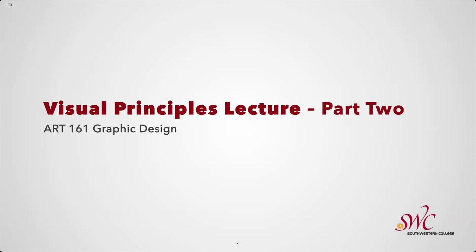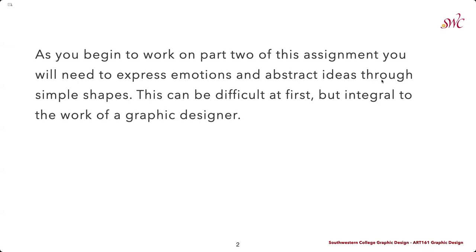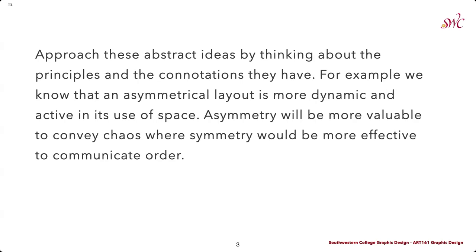This is the Visual Principles Part 2 lecture for the ART 161 Graphic Design class. In the second half of this project we're going to be focusing more on these core concepts of creating more abstraction, and directly relating to the first part of this project, thinking about how we can use those principles to evoke certain emotions and different feelings that you are going to choose from a list. As you begin to work on Part 2 of this assignment, you're going to think about ways to express emotions and abstract ideas through these same simple shapes — the basic elements of points, lines, and planes. The same rules are going to apply from Part 1 as well, and this can be difficult at first, but it's really important to understand these basic concepts and think about how we can express these ideas through our design work.